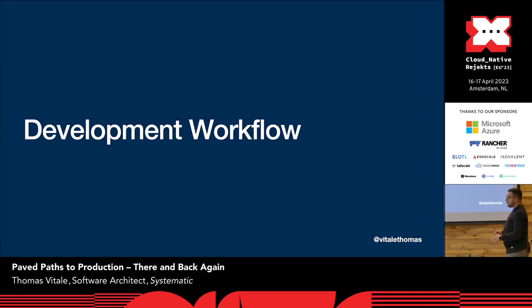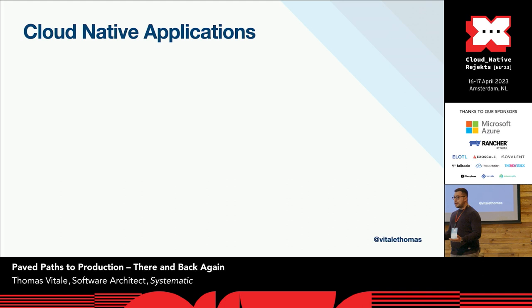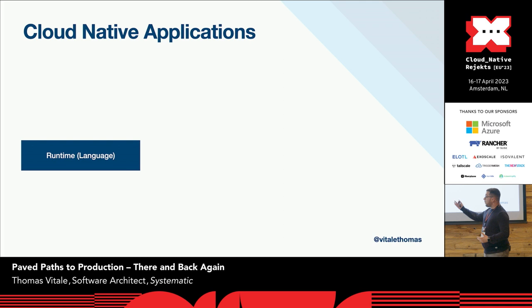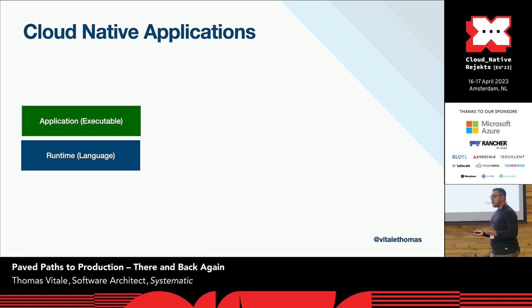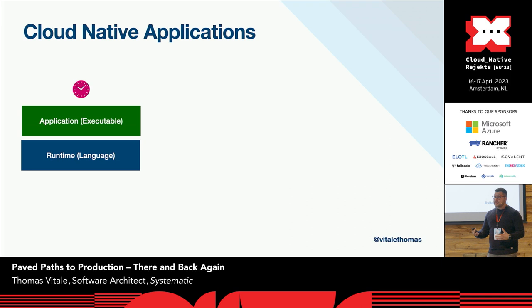We'll start with the development workflow. We got the initial idea, bootstrapped a new project, built a new cloud native application. Depending on the language we are using, the runtime might change. But in general, on top of that, we package our application as an executable and run it directly on top of this runtime. This is a very nice and clean experience. The feedback loop is quite fast — just think about a Go application, it's very fast to compile and run. And the cognitive load is not that bad, because we basically need to know just about the language and framework.